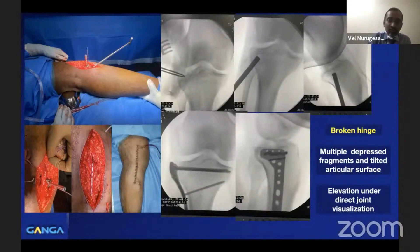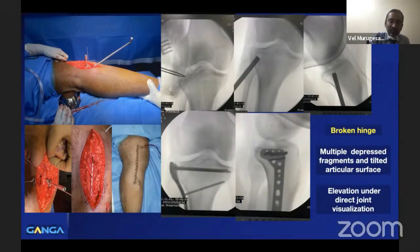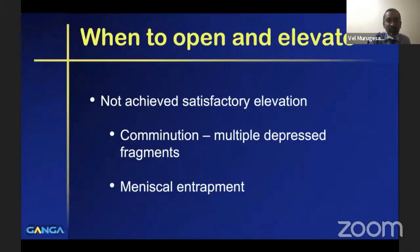To aid visualization, we place a rolled sheet under the thigh so that a varus stress opens up the joint, which helps in visualization. For multiple depressed fragments or a tilted articular surface, elevation under direct visualization by submeniscal arthrotomy is preferred.